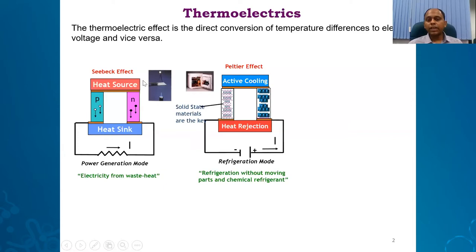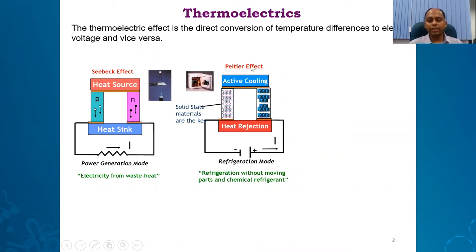The difference between the Seebeck effect and Peltier effect is that in the Seebeck effect we provide temperature difference and get voltage, whereas in the Peltier effect we provide voltage but get temperature difference. This active cooling end can be used for refrigeration. There are several products in the market based on the Peltier effect, but at this moment we are interested in the Seebeck effect.